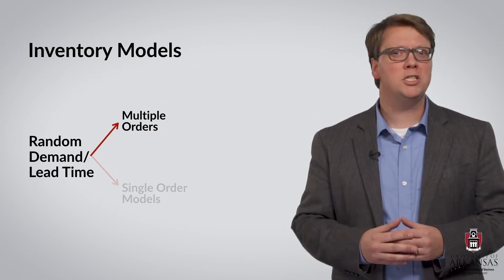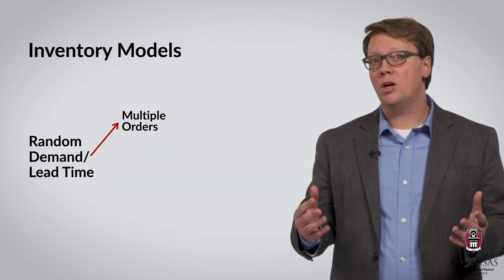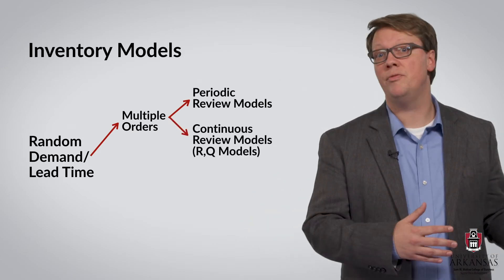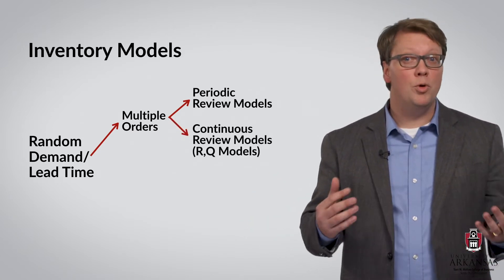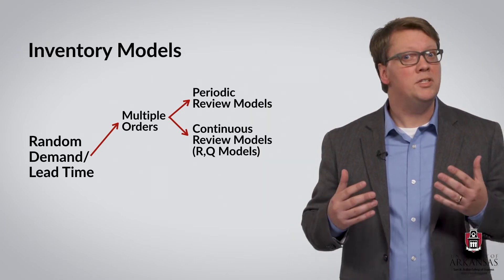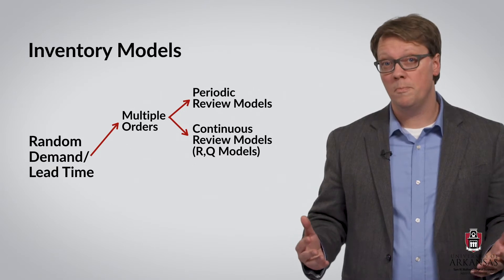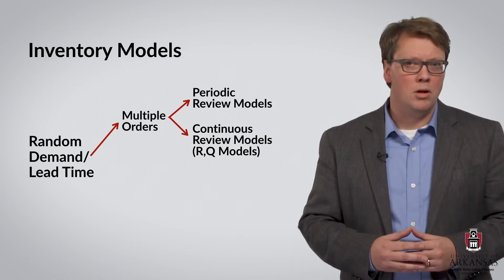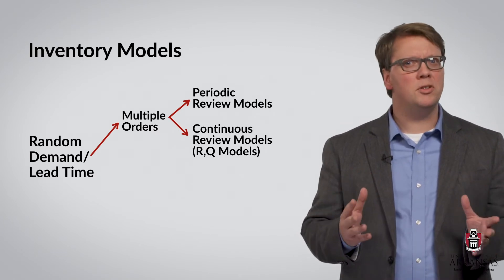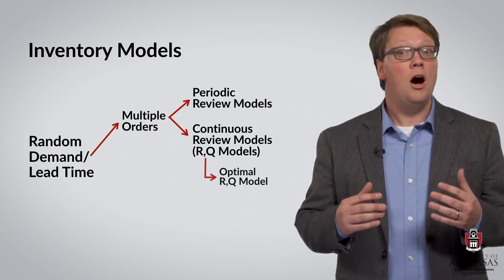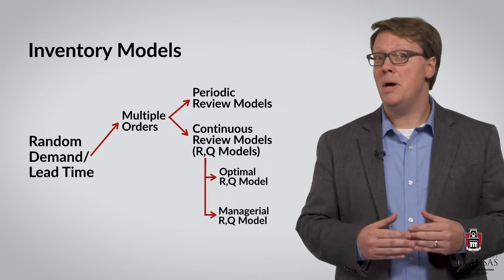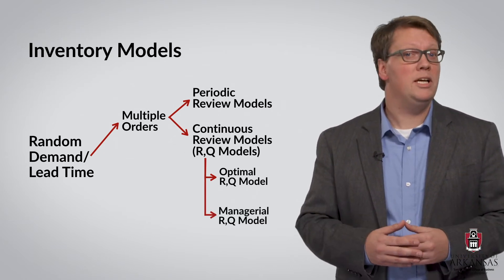Focusing on multiple-order models, there are what we call periodic review models and continuous review models. The reorder point, or RQ model, is a prominent example of a continuous review model. This is the inventory model we will focus on in this lecture. In particular, we will talk about the optimal RQ model first, and then cover the managerial RQ model in a separate lecture.